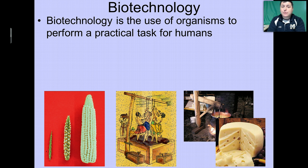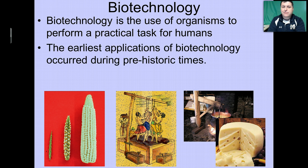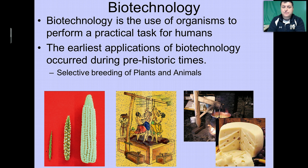Biotechnology is the use of organisms to perform a practical task for humans. The earliest applications of biotechnology occurred during prehistoric times. Early humans, as we do today, would selectively breed plants and animals to produce organisms that might yield additional product.